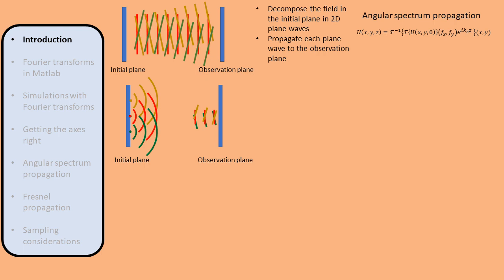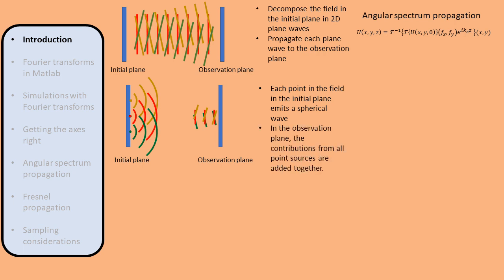According to Huygens' principle, each point in the initial field acts as a point source. To find the field in the observation plane, we must add the contributions from all point sources together. Using this principle, we can derive the Fresnel diffraction integral. To compute this integral, we multiply the initial field with a quadratic phase factor and Fourier transform the result.